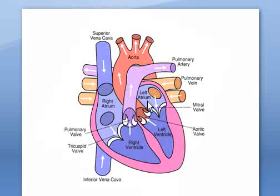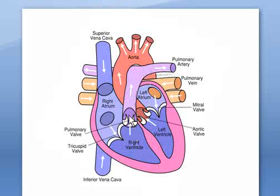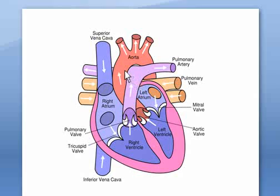On the next slide, this is the right ventricle again, and the main pulmonary artery. The left pulmonary artery is pushing deoxygenated blood from the right ventricle into the left lung. And the right pulmonary artery is pushing deoxygenated blood into the right lung.